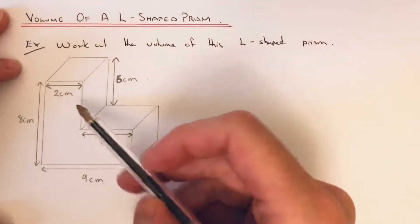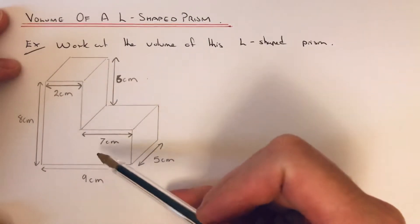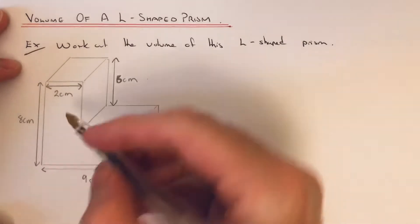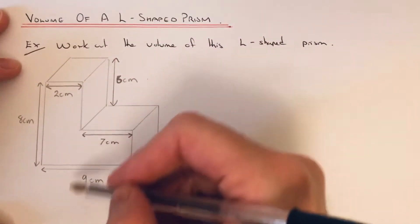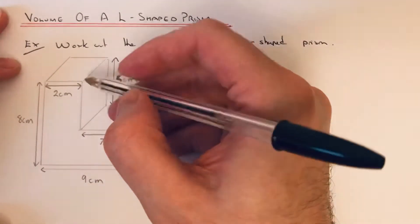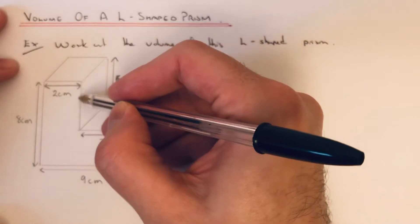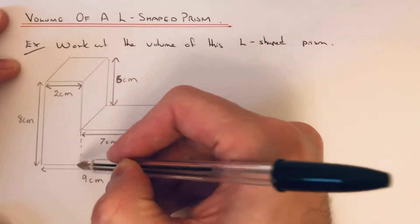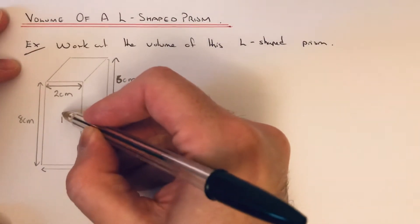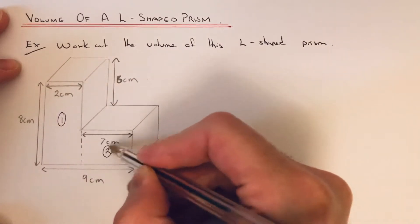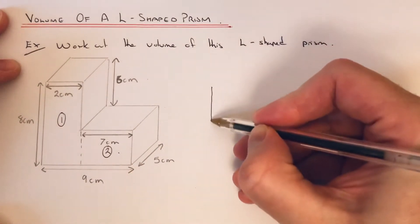You can do this going across or going downwards. It doesn't really matter which way you do it, you should get the same answer. I'm going to split it going down. Let's say this is cuboid 1 and this is cuboid 2.